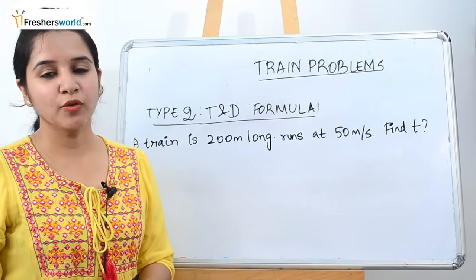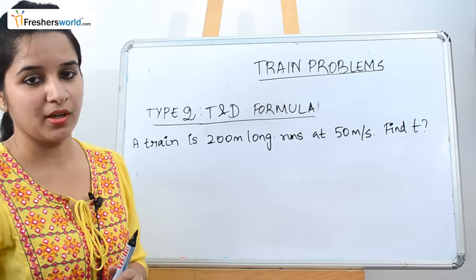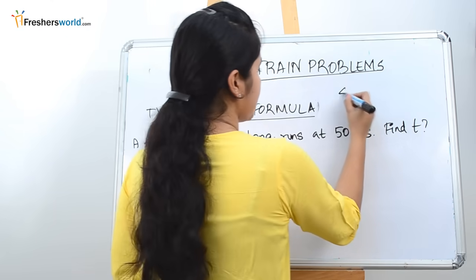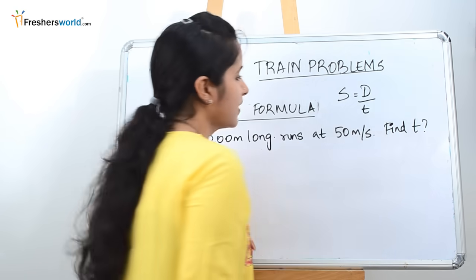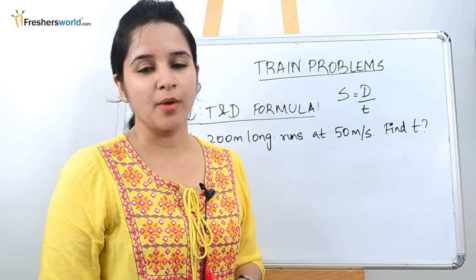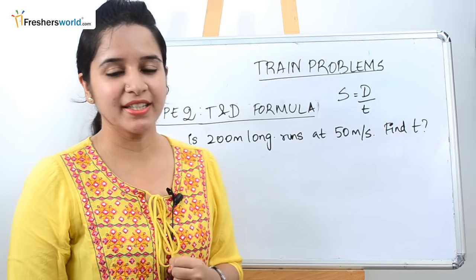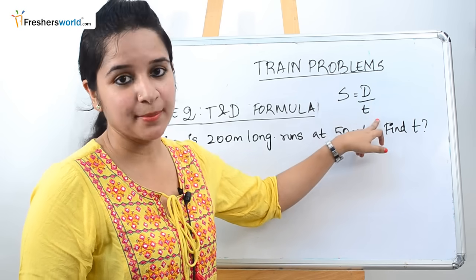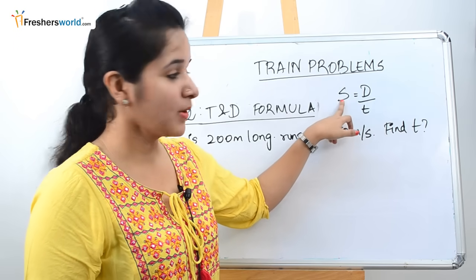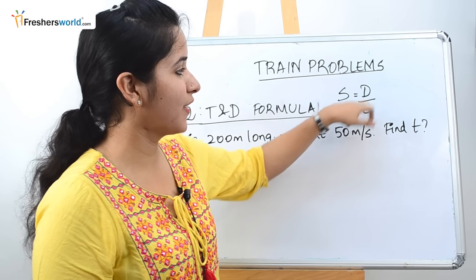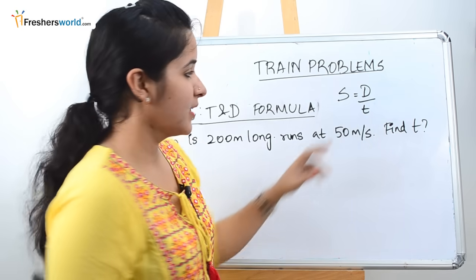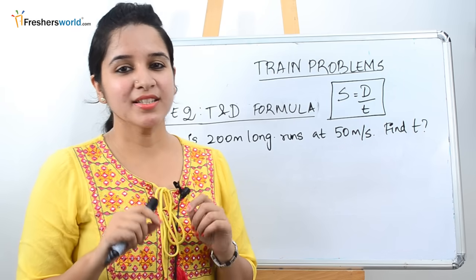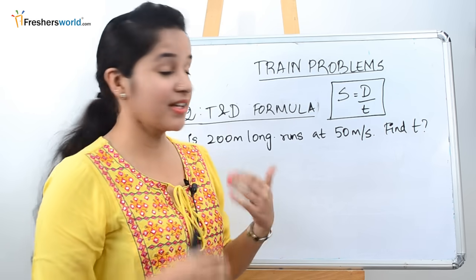Type 2 of train problems is the time and distance formula. The formula to remember is: speed equals distance divided by time. This is the most common question in any aptitude exam. They will either give you distance and time and ask you to find speed, or give you speed and time and ask you to find distance, or vice versa. Let's solve a simple problem to understand the formula better.